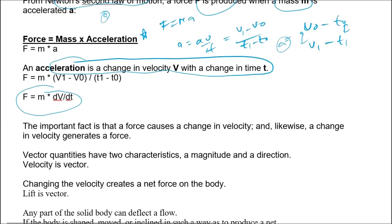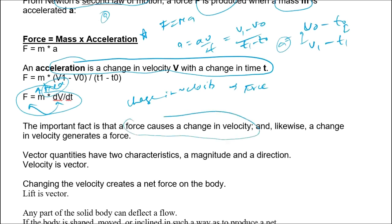This is a very important equation. From it we understand that any change in velocity produces a force, since mass is fixed and is a scalar quantity. So dv/dt — the change in velocity — produces a force. Similarly, a change in force causes a change in velocity, and a change in velocity generates a force.